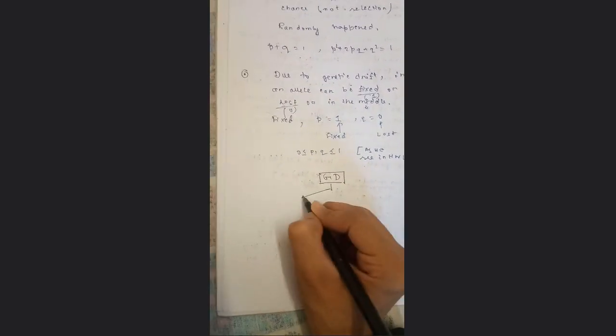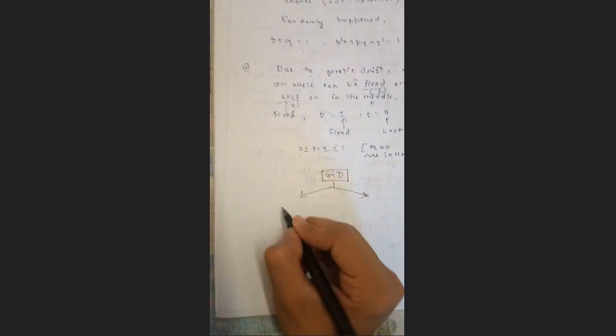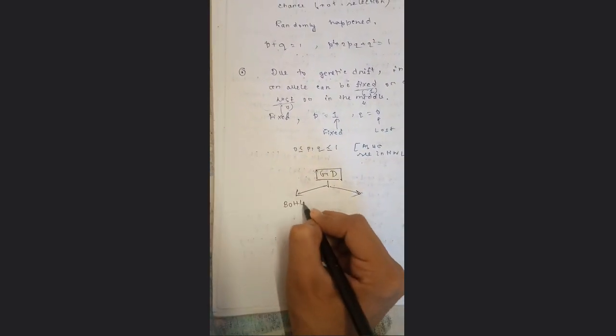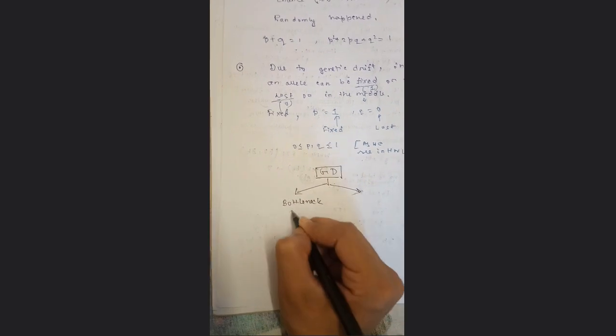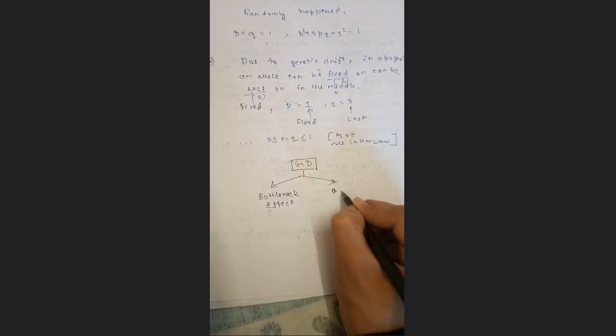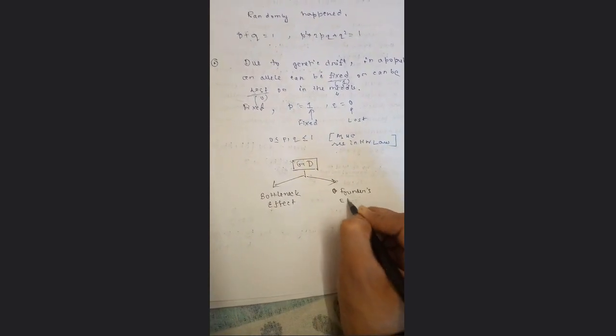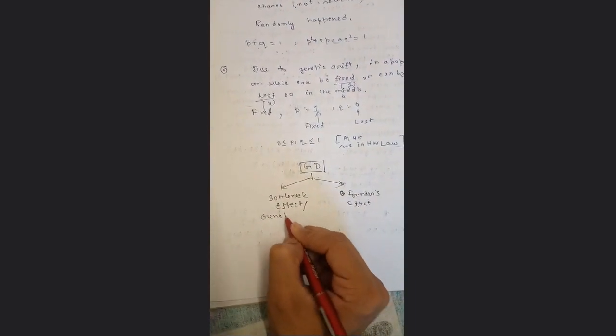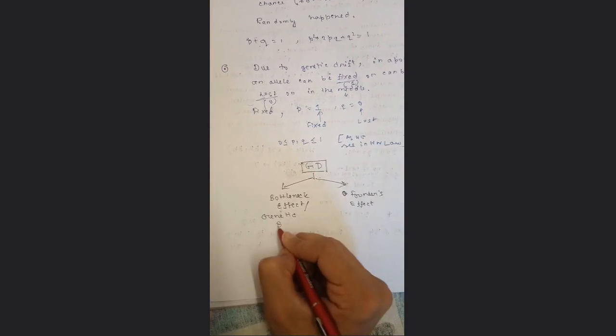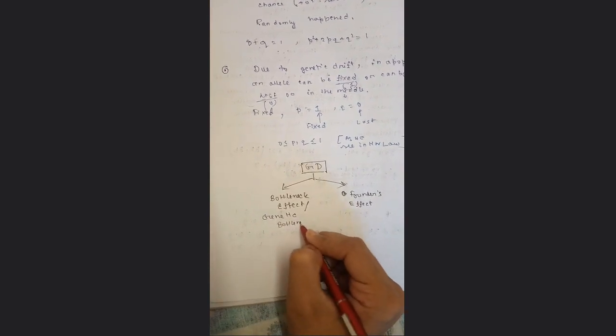Genetic drift can be of two types: one is the bottleneck effect, and the other is the founder effect, sometimes called the genetic bottleneck. Let's see what the genetic bottleneck is.